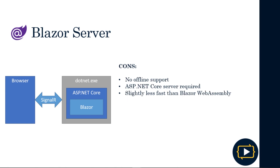But we also have some disadvantages. First, we don't have support for offline connections, meaning we must always have an active internet connection. We will definitely need an ASP.NET Core server to run the application. Also, due to the requirement of a constant connection to the server, the application will be slower than Blazor WebAssembly. This doesn't mean that the application will run slowly — we may not even notice the speed difference. But a Blazor WebAssembly application will always run faster than a Blazor Server type application.